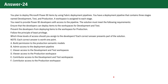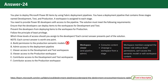Option A: Build permission to the production semantic models. This permission is incorrect because according to the Microsoft documentation, workspace members assigned the viewer role without build permissions can't access the semantic model or edit workspace content. This means if you have build permission, you can access the semantic model or edit workspace content, which we do not want to give developers in production. Thus, this option is incorrect.